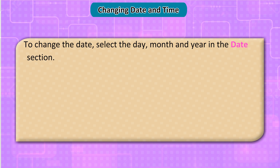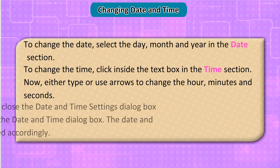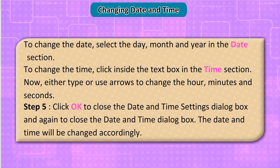To change the date, select the day, month, and year in the date section. To change the time, click inside the text box in the Time section, then either type or use arrows to change the hour, minutes, and seconds. Step 5: Click OK to close the Date and Time Settings dialog box and again to close the Date and Time dialog box. The date and time will be changed accordingly.